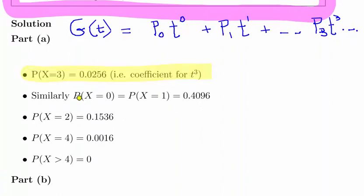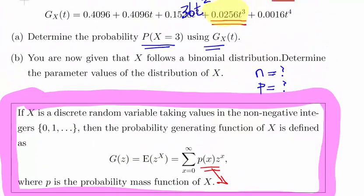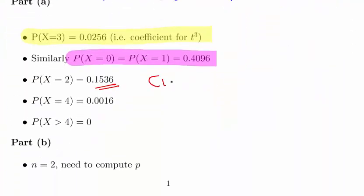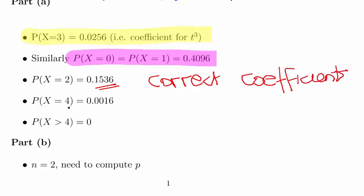Now just looking at the other ones here, the probability of X equal to 0 and X equal to 1 is 0.4096. The probability of X equal to 2 is 0.1536, which is the correct value there. 2.8 was a typo. So that's the correct value. I'll just write it in there, the correct coefficient. Probability of X equal to 4 equals 0.0016 and the probability of X greater than 4 is 0.